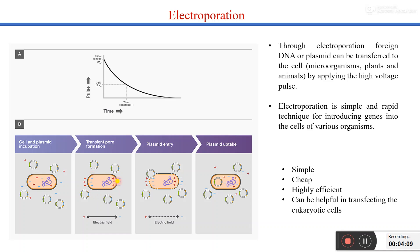That high voltage pulse results in the formation of pores across the plasma membrane, and through those pores the foreign DNA enters inside the cell. By applying a very high voltage pulse across the plasma membrane, we can insert the foreign DNA — our gene of interest — inside the cell.